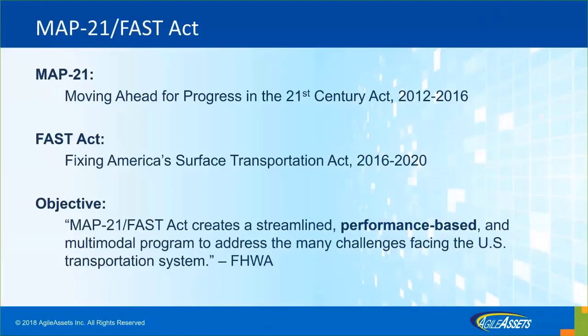Let's start with the definition of MAP-21. Moving Ahead for Progress in the 21st Century Act, called MAP-21, was enacted in 2012, and it continues with FAST Act — the Fixing America's Surface Transportation Act — starting in 2016. The objective of both is to reform and transition to performance-based programs, including establishing national performance goals for federal aid highway programs. FAST Act supports and continues this overall performance management approach and requires states to invest resources in projects that make progress toward those national goals.